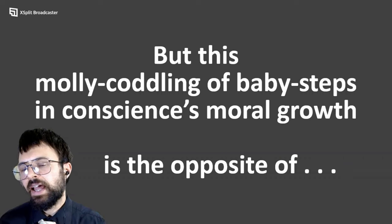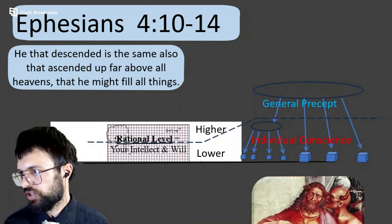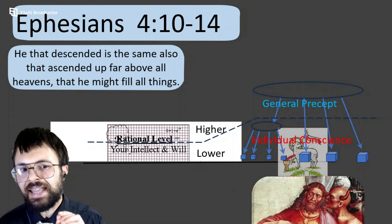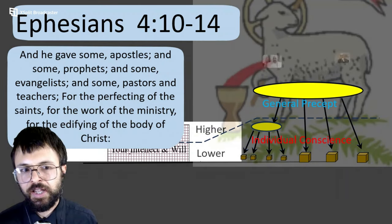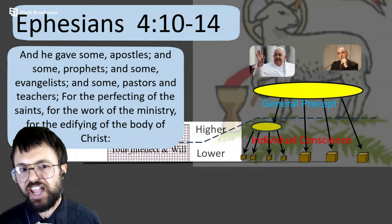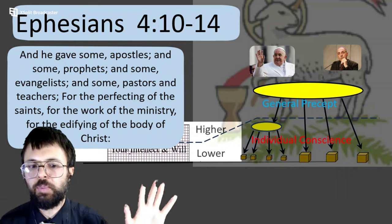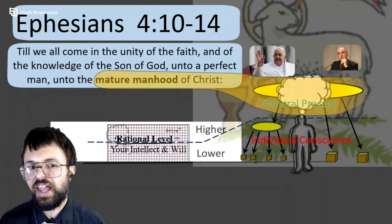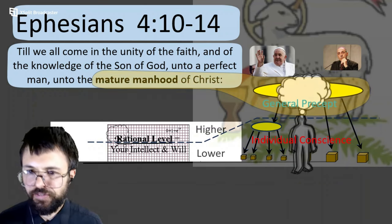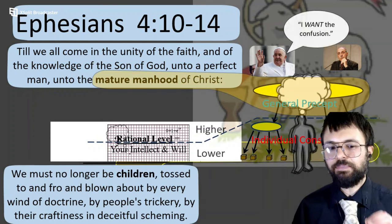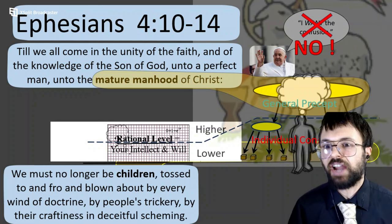But this mollycoddling, this bias in favor of childlike moral non-development, is the opposite of what Ephesians 4 tells us is the goal of the moral life: 'He that descended is the same also that ascended far above all the heavens, that he might fill all things. And he gave some apostles, some prophets and evangelists and pastors and teachers for the perfecting of the saints, for the edifying of the whole mystical body of Christ — until we all come to the unity of the faith and of the knowledge of the Son of God, unto the perfect man, the mature manhood of Christ.' Therefore we must not be children tossed to and fro and blown about by every wind of doctrine — situation ethics — by people's trickery, by their craftiness and deceitful scheming.